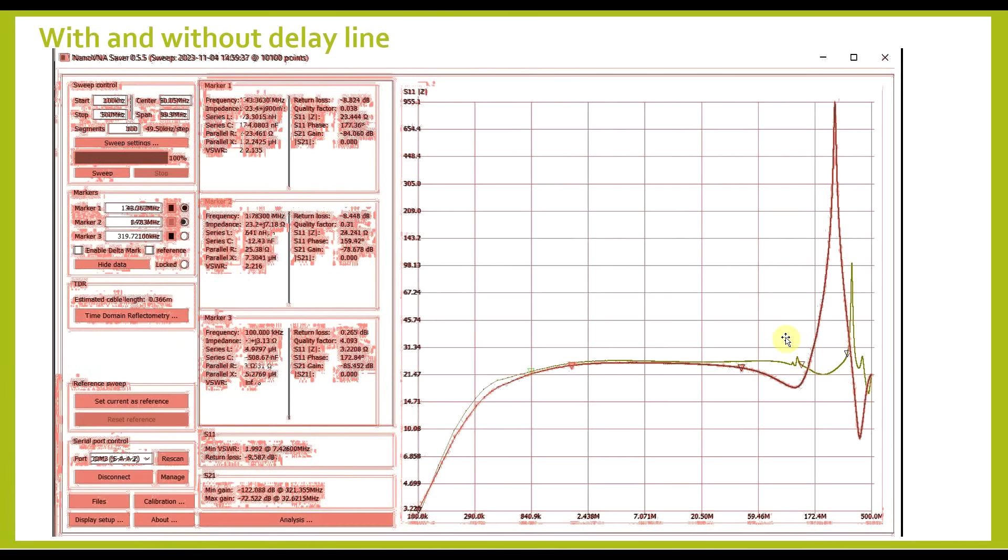Now the improvement becomes even more clear when we look at the two measurements overlapped. So the red measurement is the old measurement without the delay line, and the green one is the measurement with the delay line. But anyway, other than the delay, would there be anything else to keep in mind when building this sort of transformer?